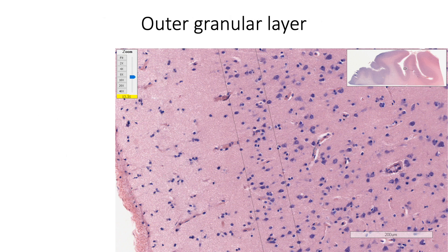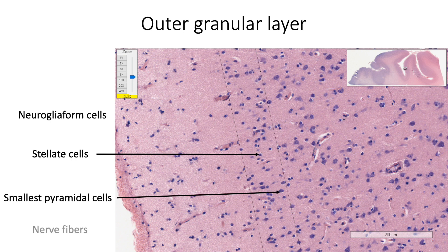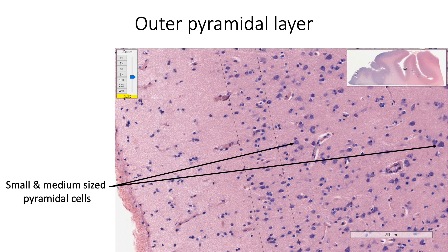The second layer is the outer granular layer. In this layer we find stellate cells, the smallest pyramidal cells, a few neuroglioform cells, and nerve fibers. The third layer, or the outer pyramidal layer, consists of small and medium-sized pyramidal cells, along with a few fusiform and basket cells.